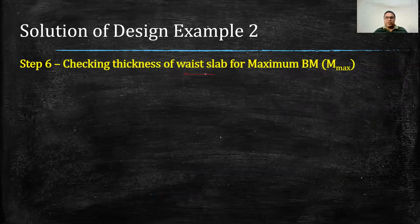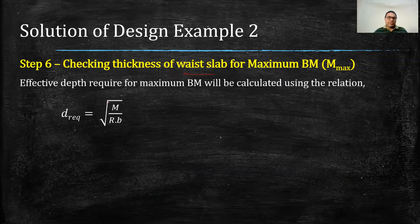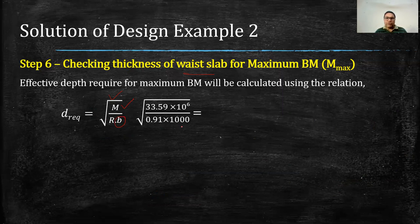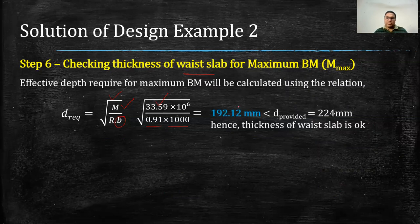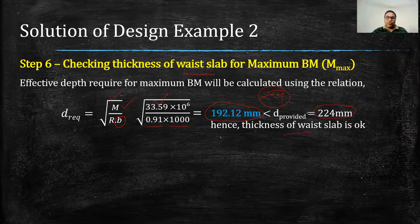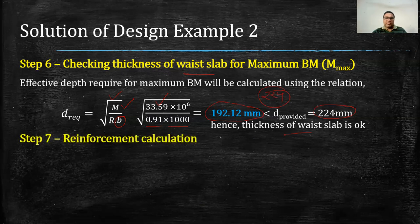For this bending moment we have to check the thickness of the waist slab. Thickness of the waist slab can be checked by using the formula to find D required. The M value is already known; since we are designing as a unit strip, b value will be 1000 mm, and Ru value will be 0.91. The D required comes out as 192.12 mm, while the effective depth in the stair slab taken in step 2 is 224 mm. Since D provided is greater than D required, the thickness of the waist slab is okay.